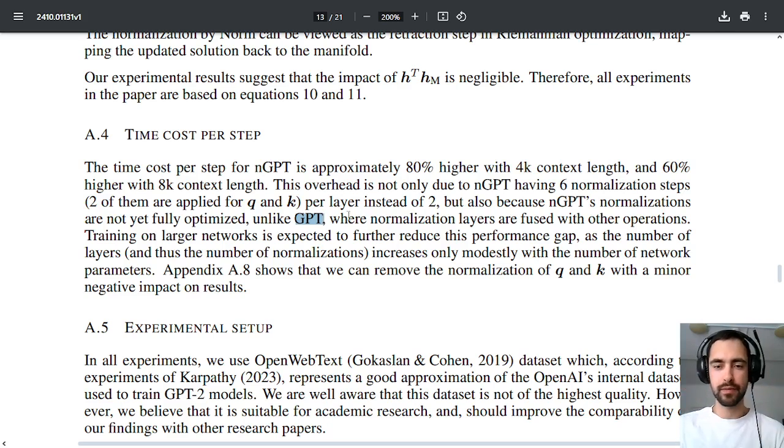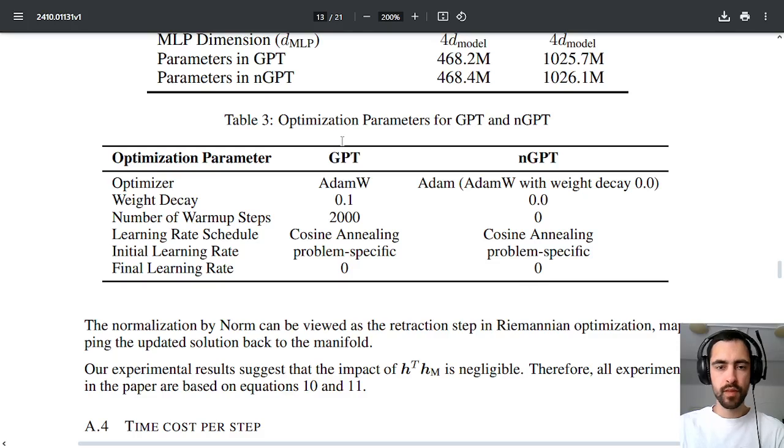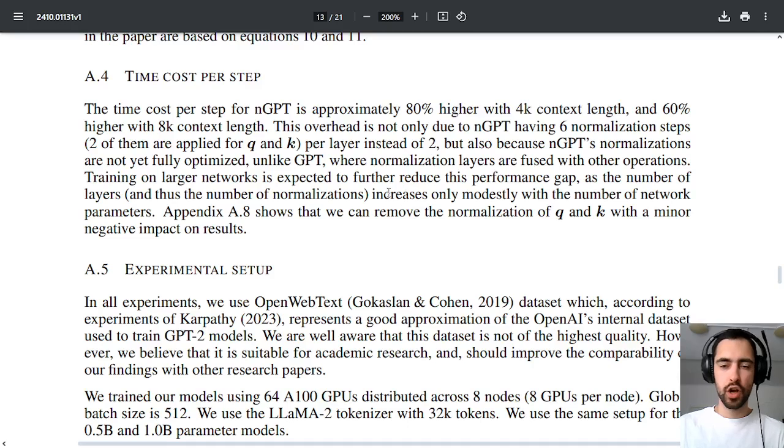for GPT's normalizations are fused with other steps and for nGPT it's not yet fused, so in the future if it's fused it's gonna be a lot faster. Optimization parameters, so nGPT has Adam, which is AdamW with weight decay zero, they don't need weight decay because when they are casting it to a sphere hypersphere and normalizing it that immediately solves the same problem as weight decay is trying to solve. Also if you completely remove normalization of query and key this gets only a minor negative impact on the results.